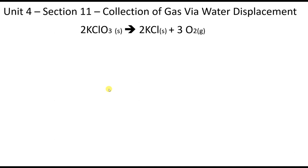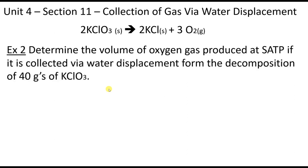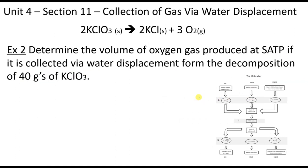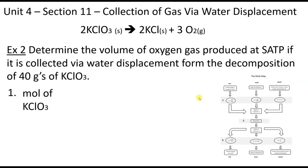Earlier in the video, we saw a demonstration using potassium chlorate, so let's do a question with that. We want to determine the volume of oxygen gas produced at SATP, collected via water displacement from the decomposition of 40 grams of KClO3. Our first thought should be that this is a mole map question — we're given the mass of substance A, so the first step is to find its moles.